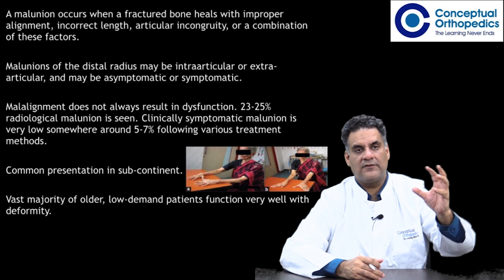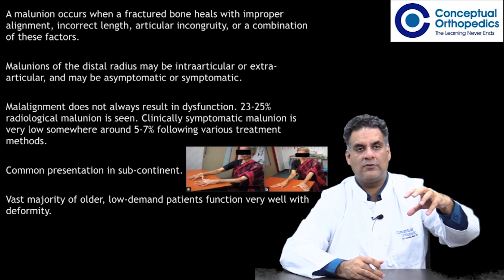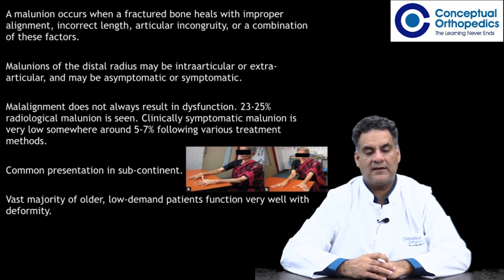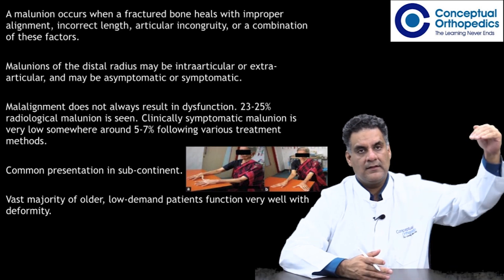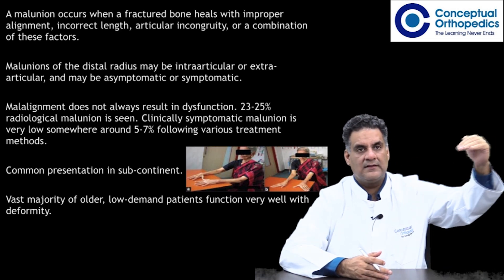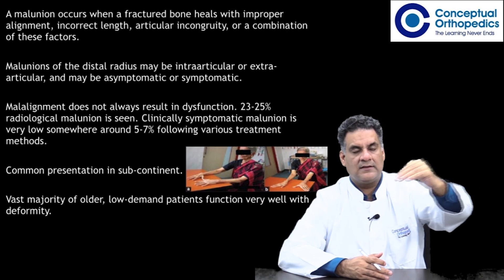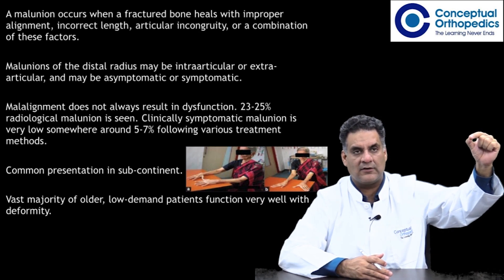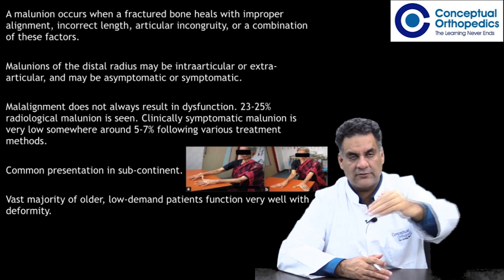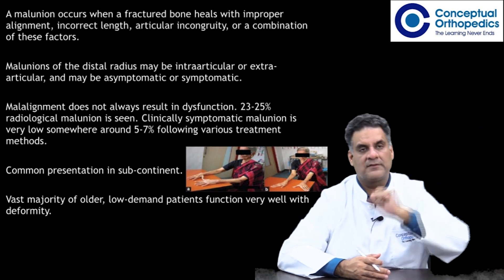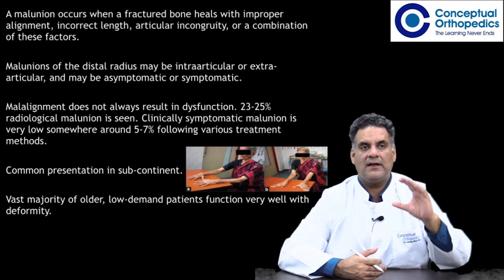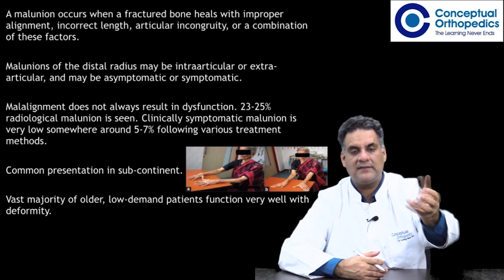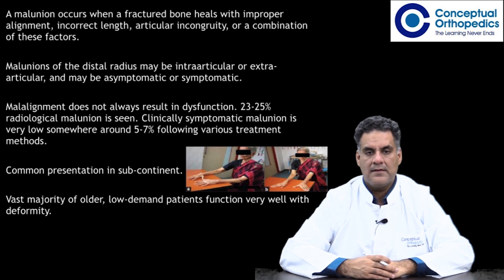The palmar tilt is the tilt of the distal articular surface of the radius, normally about 12 degrees. The radial inclination is the slope of the radial surface — the difference between the lateral point and the medial point of the radial surface — the slope on which the scaphoid rests.